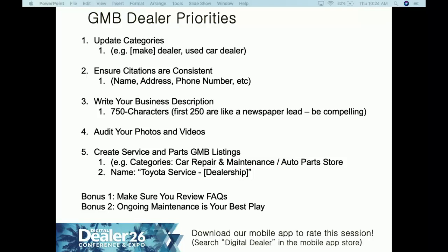For service and parts listings, choose relevant categories — like 'Car Repair & Maintenance' and 'Auto Parts Store.' Name it properly: 'Toyota Service – [Your Dealership Name]' is the ideal naming convention. Bonus tips: review your FAQs and questions on GMB regularly, and remember that ongoing maintenance is your best play. Digital marketing is not set-it-and-forget-it. Continually add photos, add videos, answer questions — freshness and relevance are what Google wants.